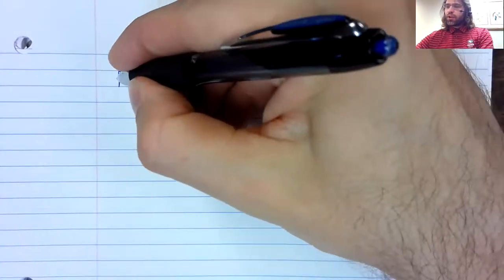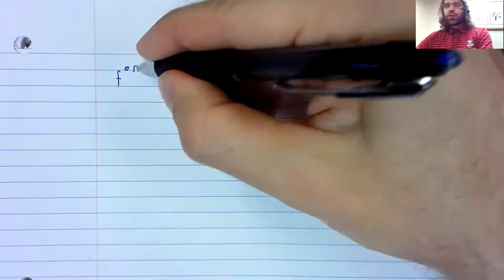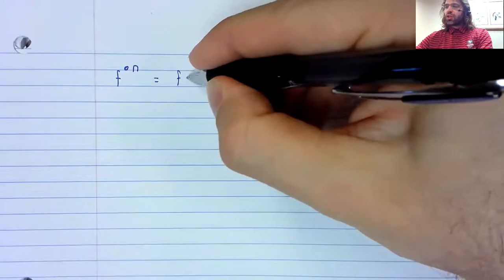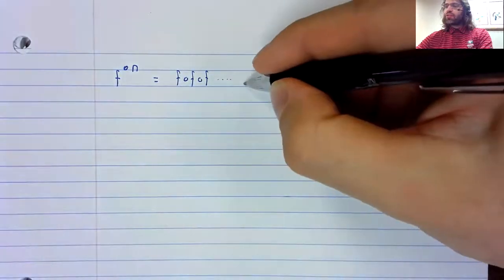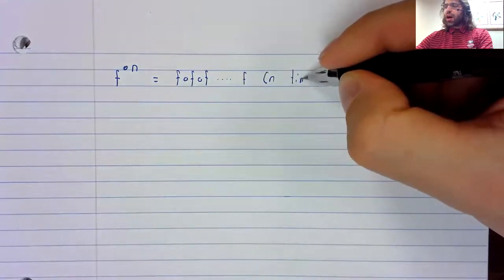So we're going to start with a piece of notation. We are going to be taking compositions here, and we'll write F, and then in the superscript, a composition circle followed by an integer, to represent the composition of F with itself n times.